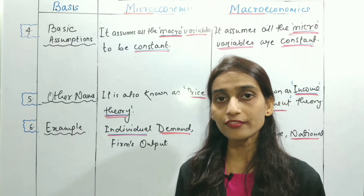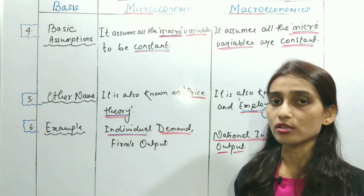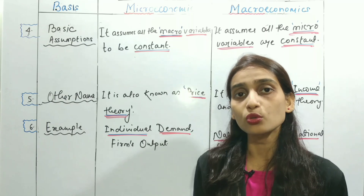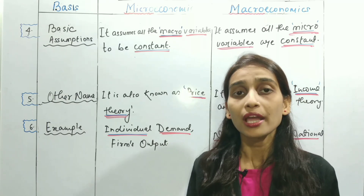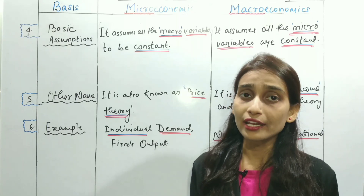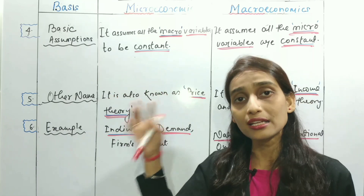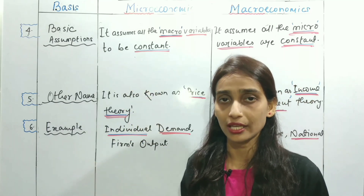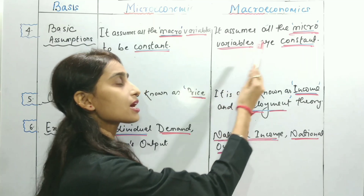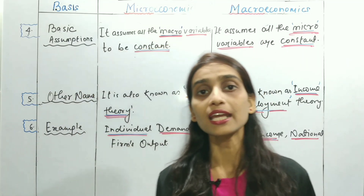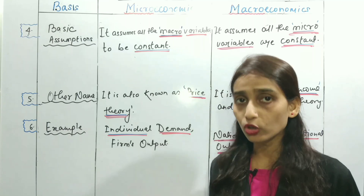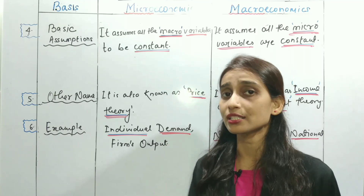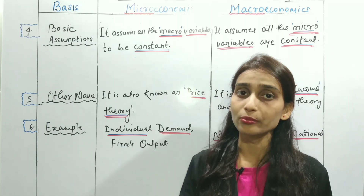The fourth point is on the basis of assumption. In microeconomics, all macro variables are assumed to be constant. When we analyze microeconomics, macro variables like national income, employment, saving, and consumption are all considered constant. In macroeconomics analysis, microeconomic variables such as individual demand, individual supply, and individual unit analysis are held constant.